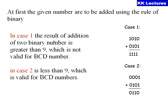In case one, the result of the addition of two binary numbers is greater than 9, which is not a valid BCD number. Taking 1010 and 0101, the resultant is all ones, which is not equivalent to a BCD number. From 1010 till 1111, these codes are called invalid codes. In case two, the result is less than nine, which is a valid BCD number — decimal one plus decimal five gives six, which is a valid addition.